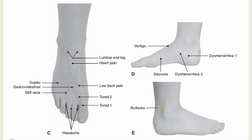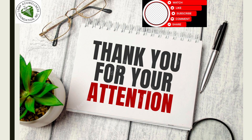On the lateral aspect of the foot: the buttocks point is located one unit directly above Urinary Bladder 60 (Kunlun) on the lateral aspect of the ankle, four units above the base of the heel. Indications include sciatic nerve pain, headache, and abdominal pain. Thank you so much for your attention, and see you in our next videos.